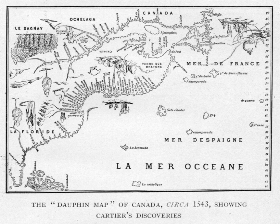European explorer Jacques Cartier transcribed the word as 'Canada' and was the first European to use the word to refer not only to the village of Stadacona but also to the neighbouring region and to the St. Lawrence River, which he called 'Rivière de Canada' during his second voyage in 1535. By the mid-1500s, European books and maps began referring to this region as Canada. Canada became the name of a colony in New France that stretched along the St. Lawrence River, and the terms 'Canada' and 'New France' were often used interchangeably during the colonial period.